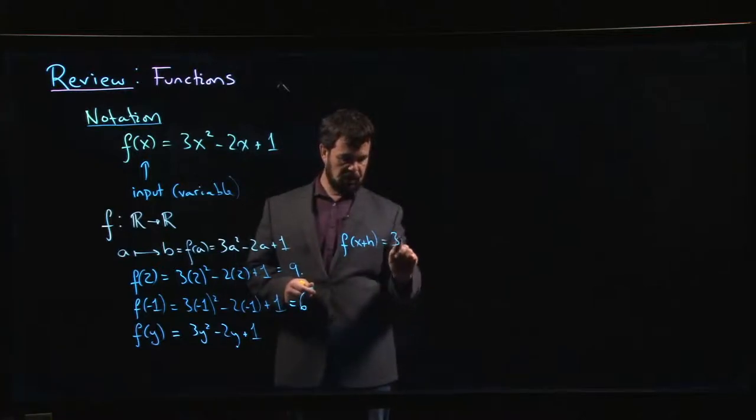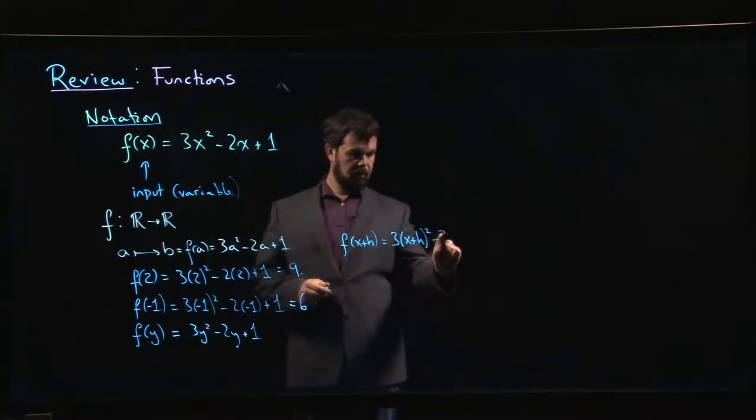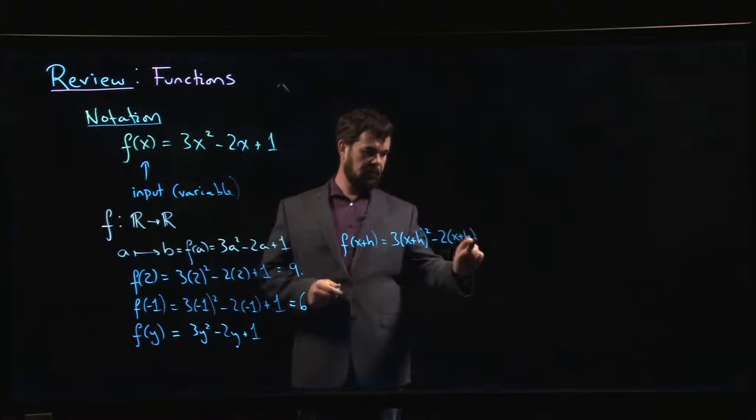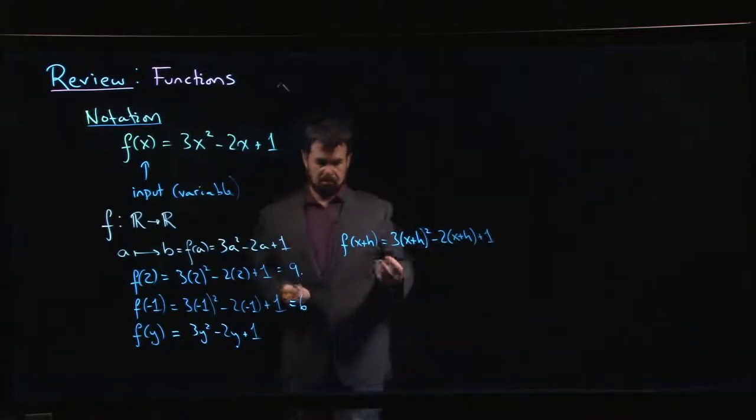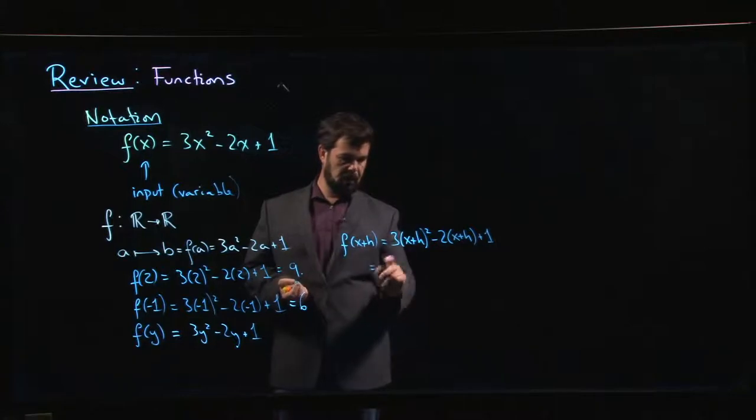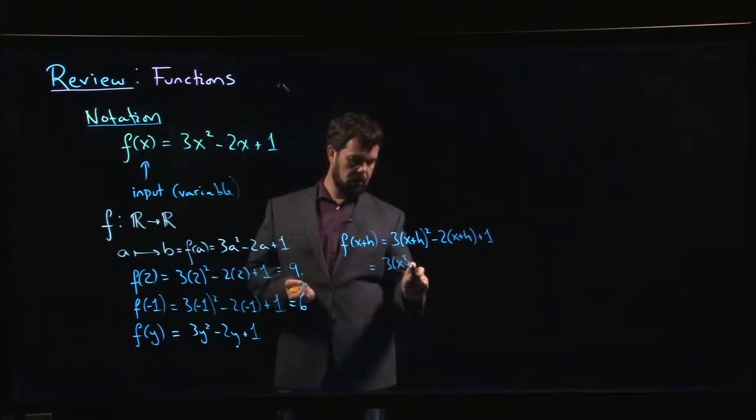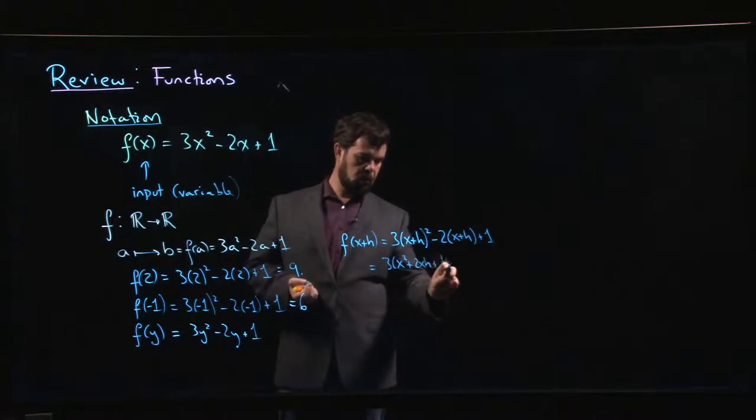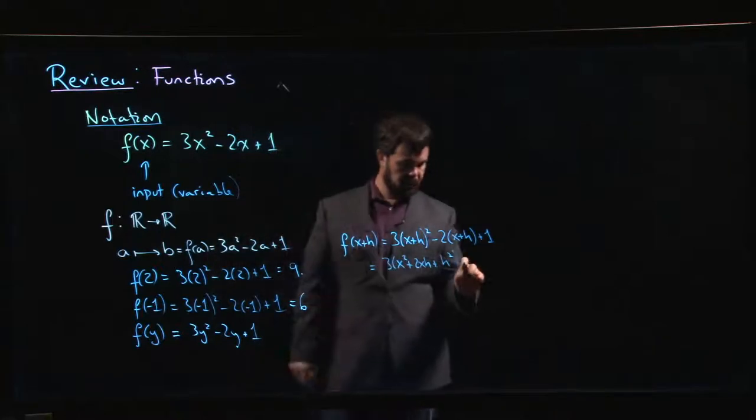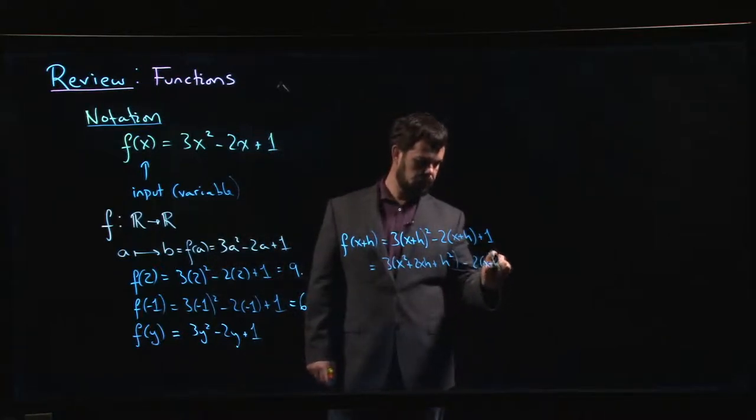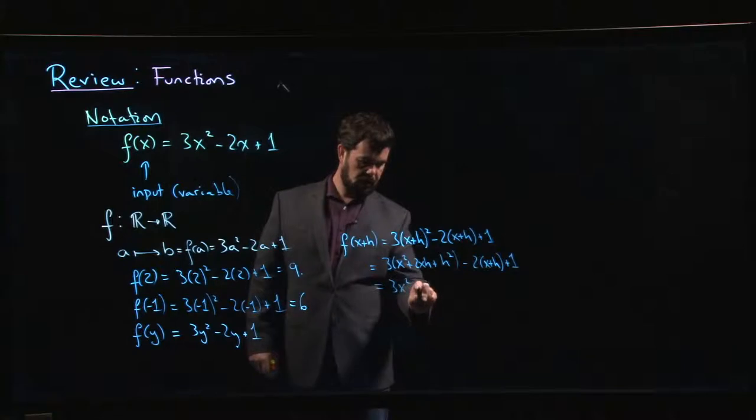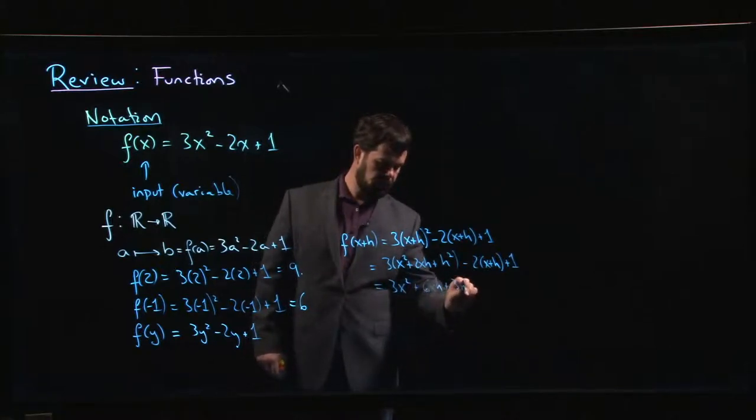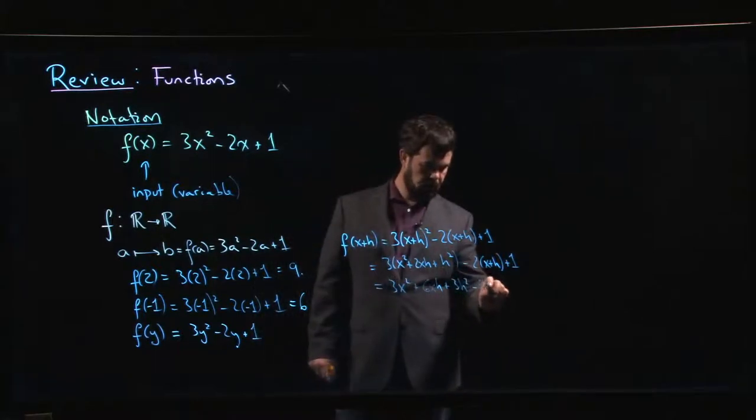So when you say f(x + h), what you mean is 3 times (x + h)² minus 2 times (x + h) plus 1. From there, if you're so inclined, you can expand. We know how to do FOIL. In fact, we might even remember the formula for the square of a binomial from a previous video. Write that out. We can put the constants through the brackets: 3x² + 6xh + 3h² - 2x - 2h + 1. Expand it out. There's not much more you can do with that. You could try to group things together, but pretty much you leave it at that.